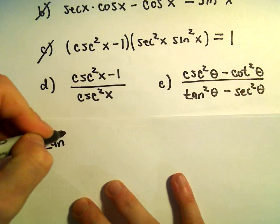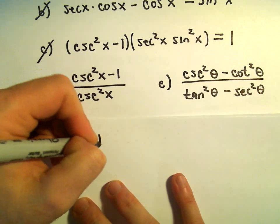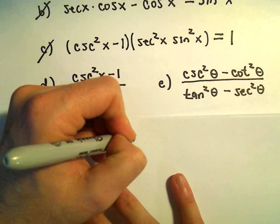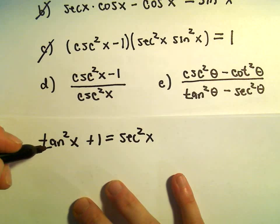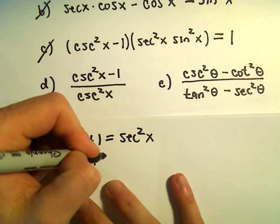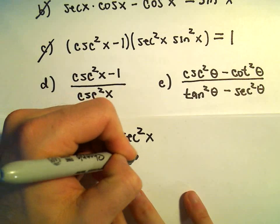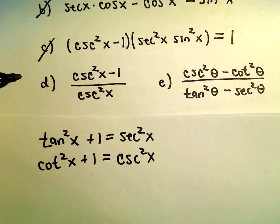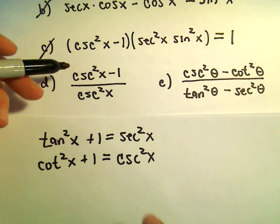I'm going to write, so we've got tangent squared x plus 1 equals secant squared x. We don't need that one just yet. The other identity is cotangent squared x plus 1 equals cosecant squared x. And I think that's the one we're going to need in this case.